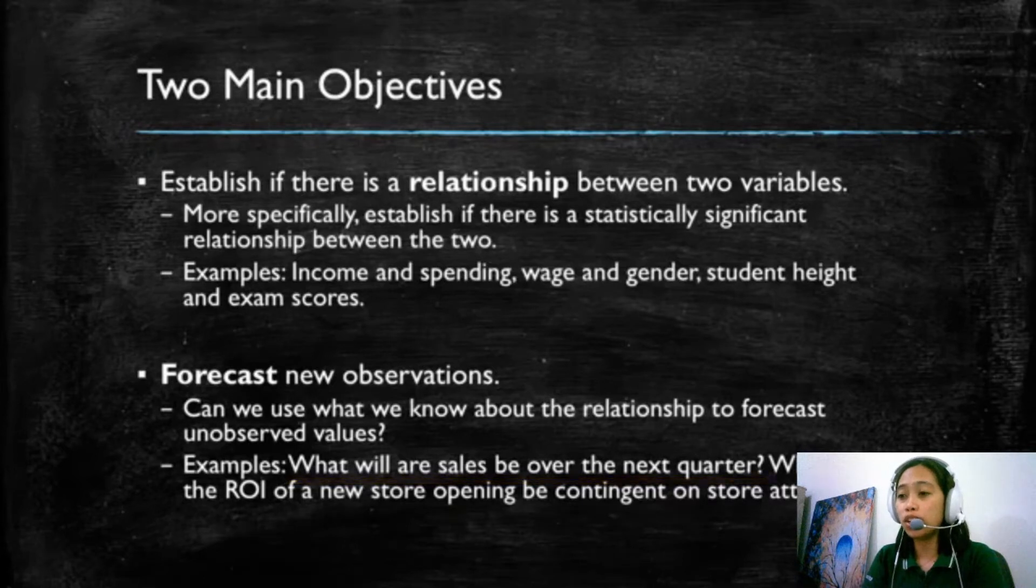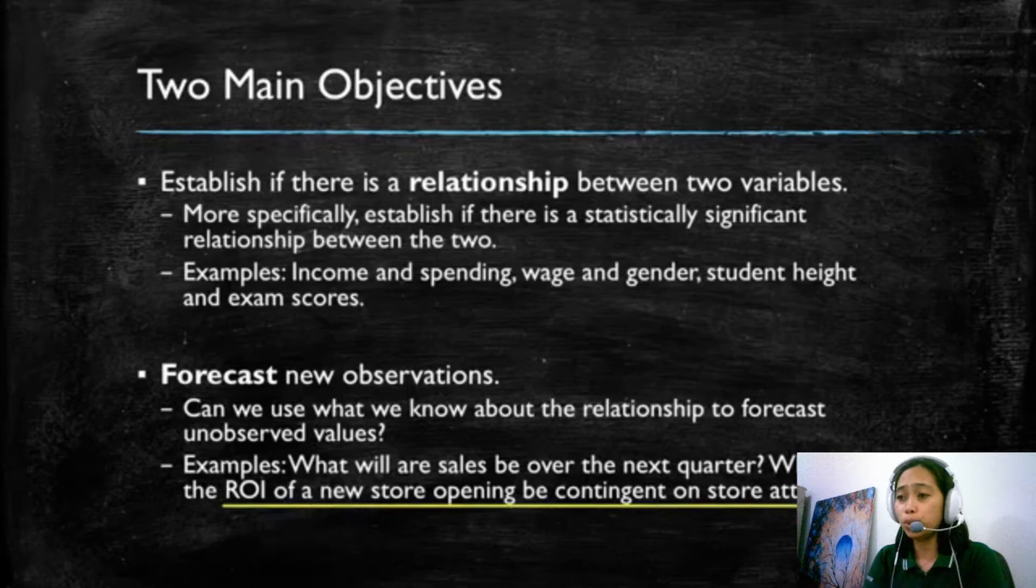Also if we have data on stores and we know how profitable different stores are and we know the relationship between how much competition a store is facing in a given location or what the population of a location is and how those variables impact the store's profitability, we could use what we know about previous stores to evaluate the profitability of a new non-existent store. Of course, we don't know how profitable the new store is going to be, but if we know how much competition it's going to face and we know how many people live nearby the store, then we can use this information to forecast that store's profitability.